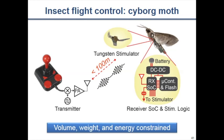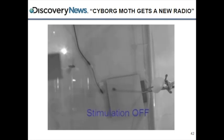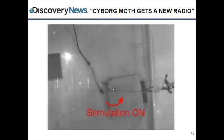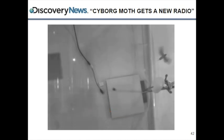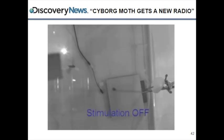In this video demonstration, the moth is flying and when the LED turns on, the moth is receiving stimulation packets. After a short physiological time delay, you can see the moth veering to the left. This is a totally wireless demonstration — there are no wires connected to the insect — and we achieved wireless neural stimulation to alter the flight direction of the insect.